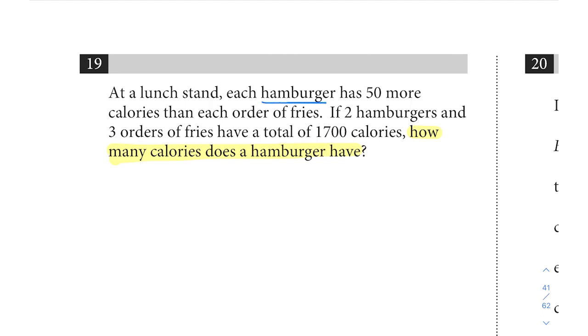We're going to have to write our own equations because they don't give us any, but there are two variables in place. We don't know how many calories hamburgers have and we don't know how many calories the fries have, but they tell us relationships between these two. Whenever we have two variables in place, we should automatically be thinking system of equations. Let's see if we can come up with an equation.